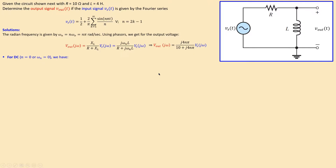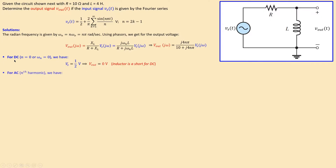First, let's look at DC: there is no AC term, so n = 0, which means ωₙ = 0. The input phasor is just one-half, but the output is zero. At zero frequency, the inductor behaves as a short circuit — just a wire — so the voltage measured across it is zero. That confirms Vout = 0 for the DC component.